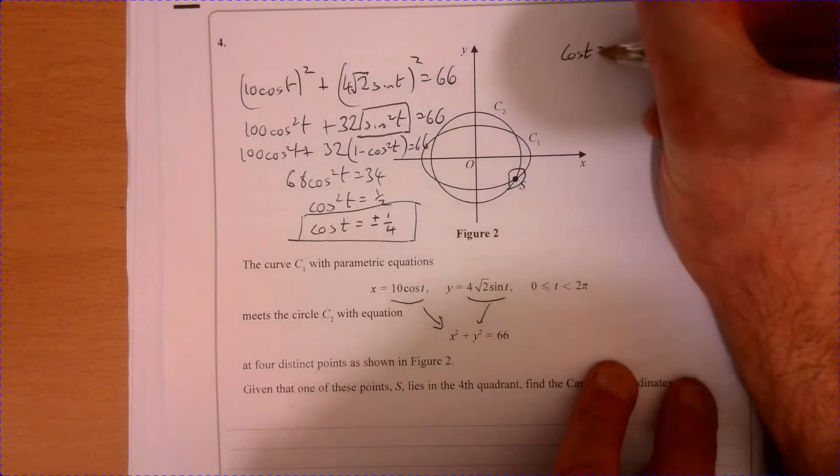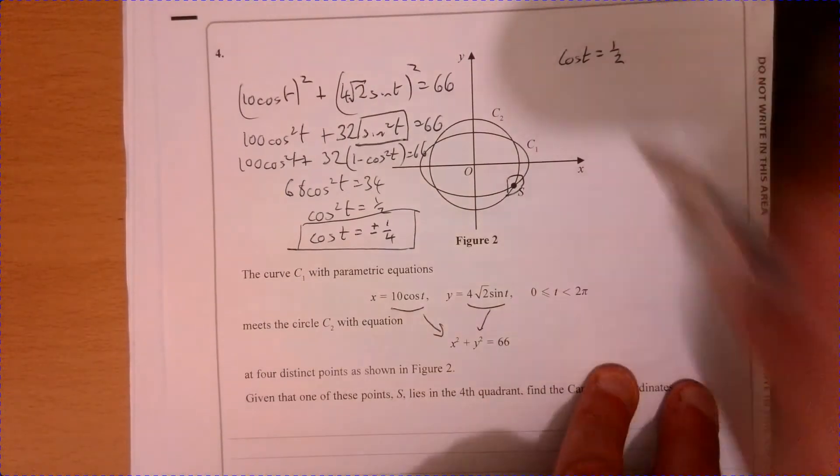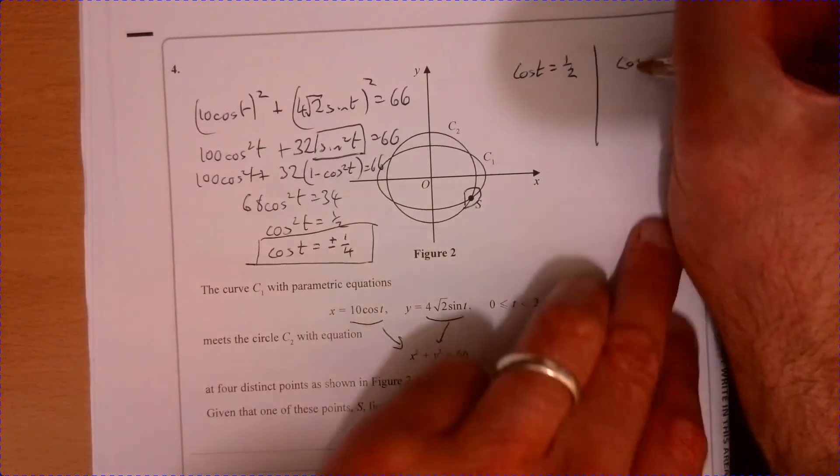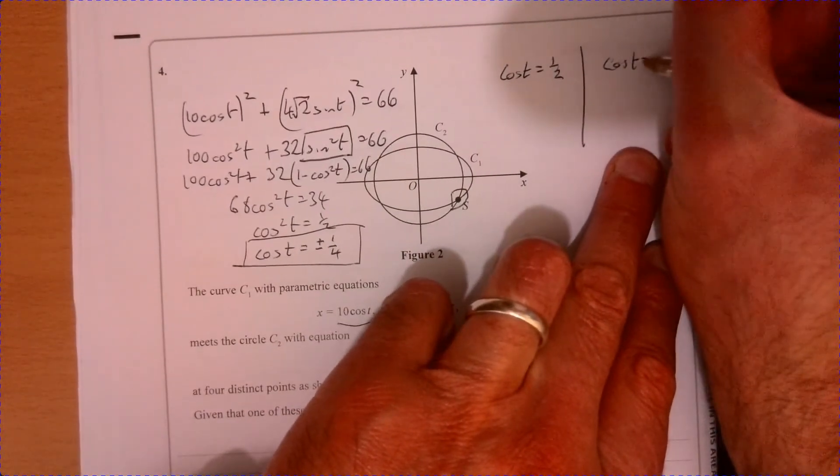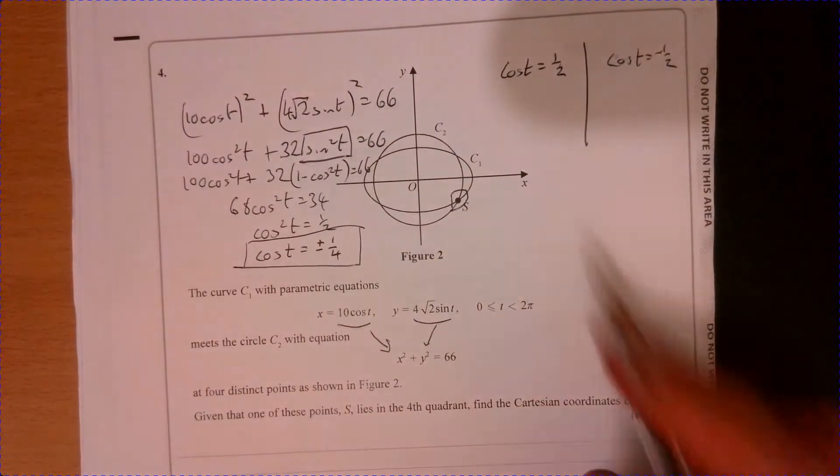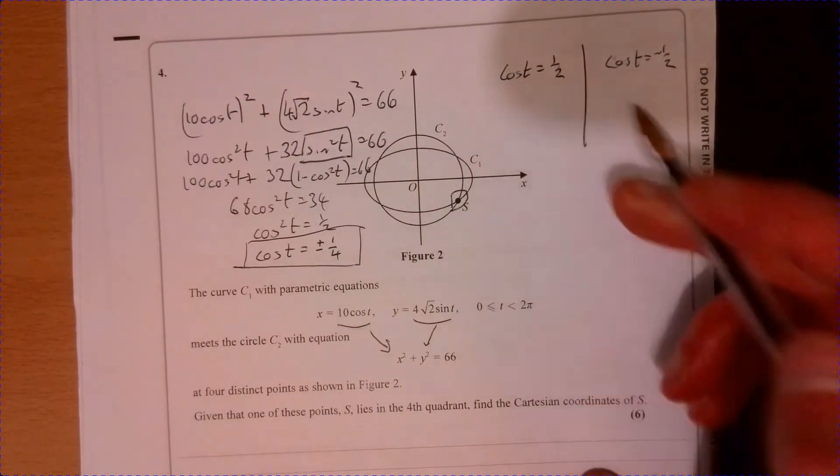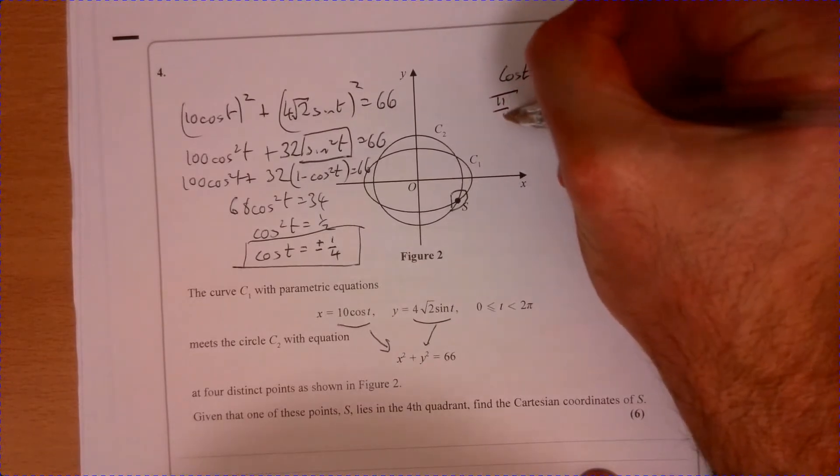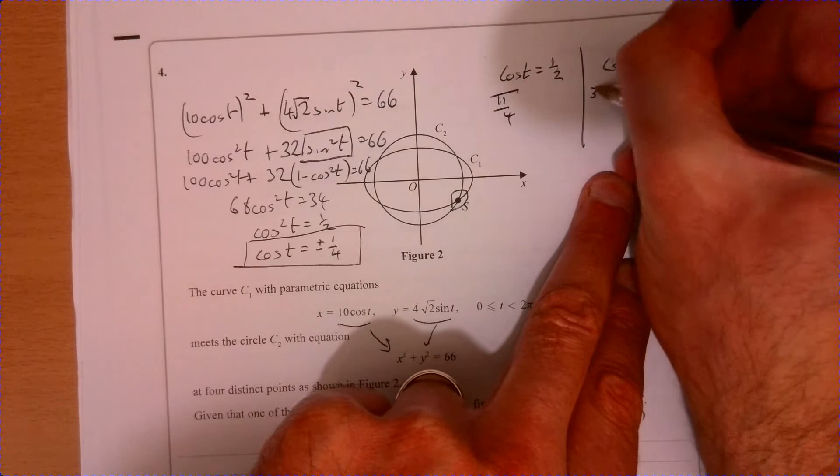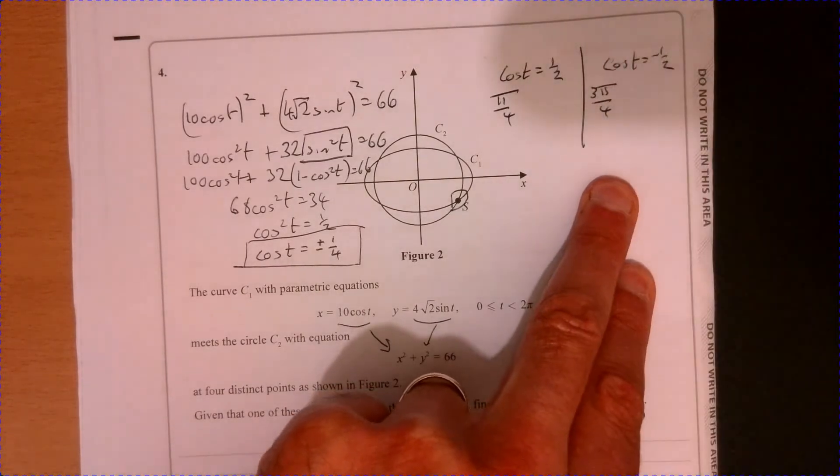So if we say cos T, so that's equal to a half. And then let's consider cos T equal to minus a half. So working with this one, first of all, that would give us pi over four. And then working with this one, just doing arc cos of these, would give me that value there.